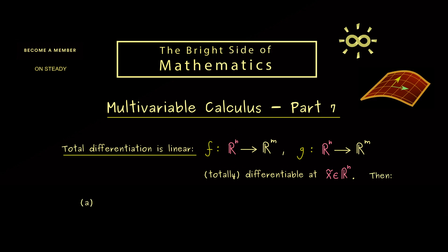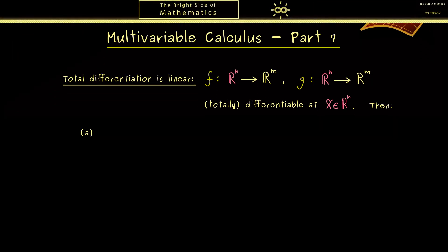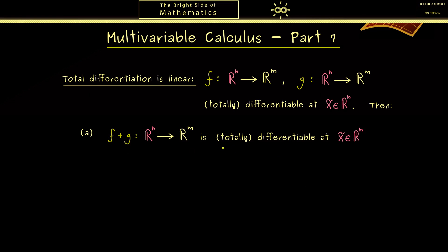We have two functions and we can form the sum of both functions, which is obviously again a function from Rn to Rm. It might not surprise you that this new function is also totally differentiable at the given point x̃. Moreover, we also know how the total derivative looks like — it is denoted by D of f plus g at the given point x̃. This whole thing denotes a linear map from Rn into Rm. The result is that this linear map is formed from two other linear maps: the total derivative of f at x̃ and the total derivative of g at x̃, and their sum gives us the total derivative of f plus g.